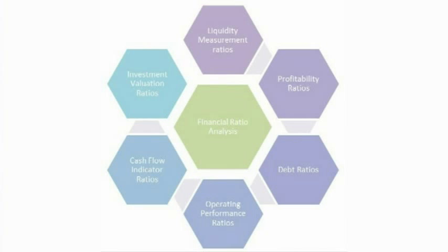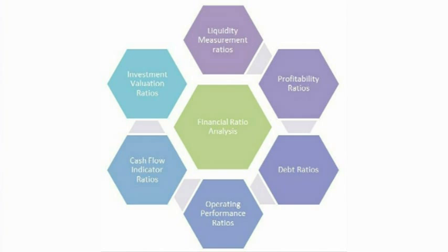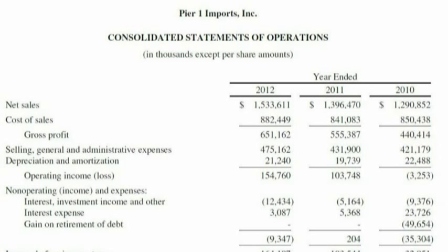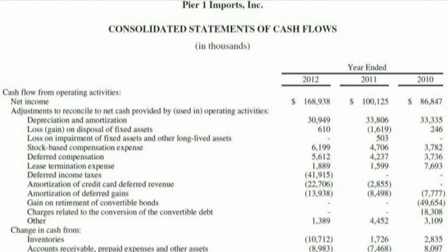The categories of these ratios are liquidity measurement ratios, profitability ratios, debt ratios, operating performance ratios, cash flow indicator ratios, and investment valuation ratios. Just about every ratio used will get the components, or the numbers, needed to derive the ratio from the company's financial statements, such as the income statement, the balance sheet, and the cash flow statement.